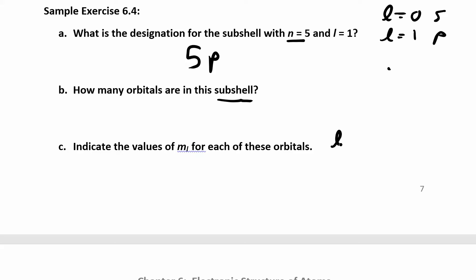So if l, let's do c first. If l is 1, ml could be negative 1, 0, or 1. That means I have 3. So I have 3 orbitals.